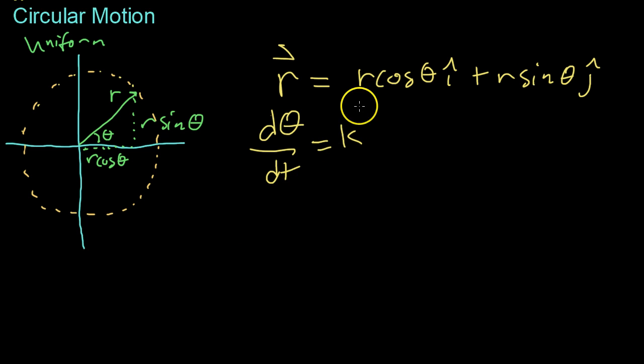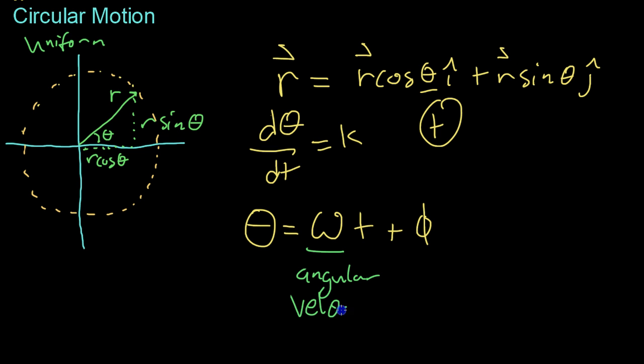Instead of making this r vector dependent on theta, rather, we can make it dependent on time by replacing theta with an expression omega t plus phi, basically where omega represents the angular velocity, how fast it is going around the circle at that constant velocity. And phi is the initial angle.